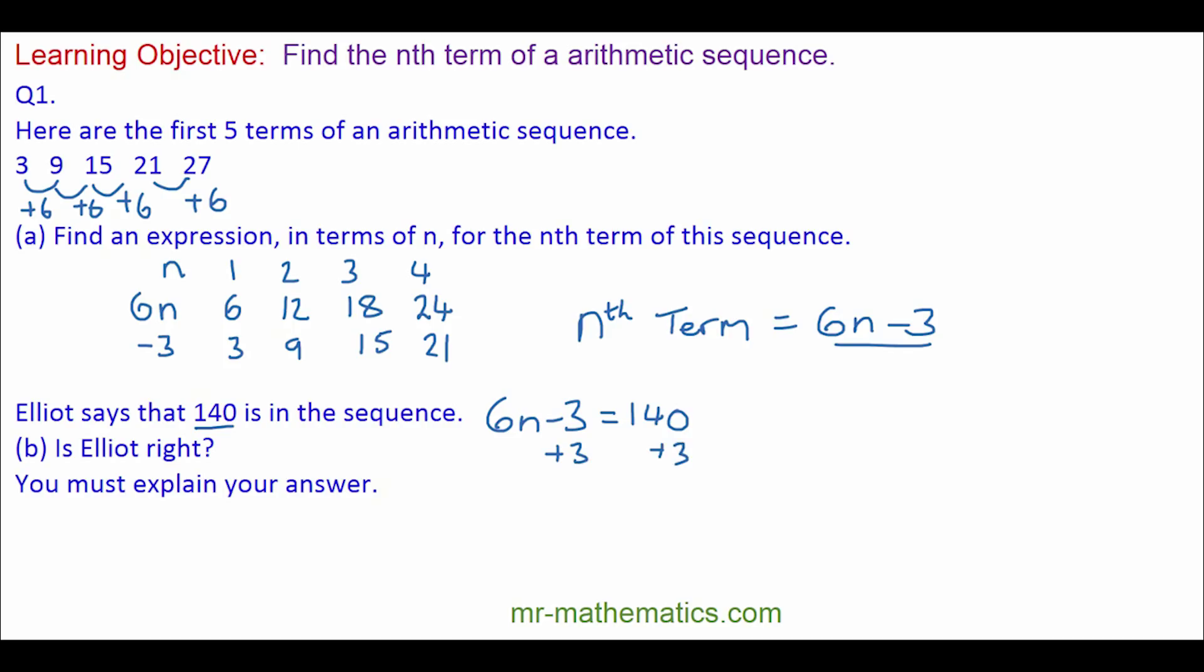So 6n minus 3 can it equal 140? We will solve the equation, add 3 to both sides. So 6n equals 143.